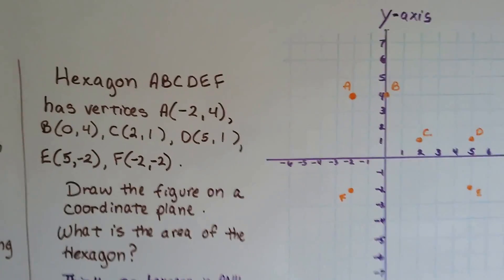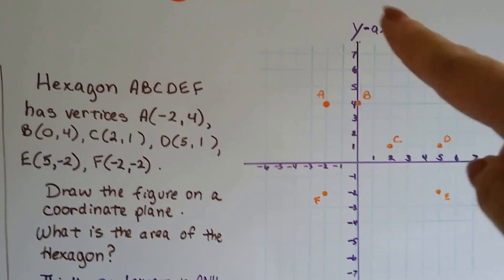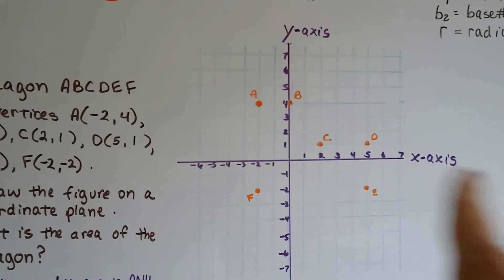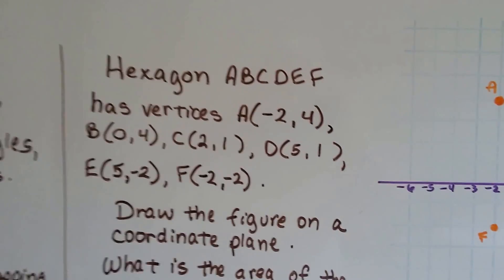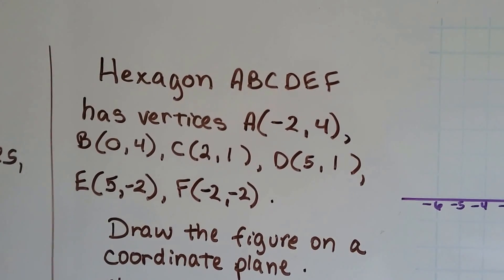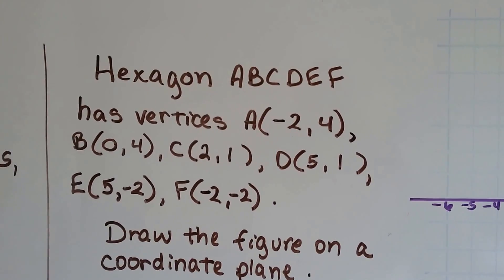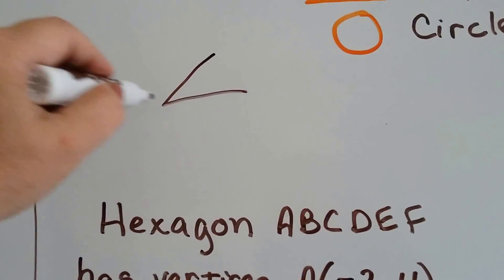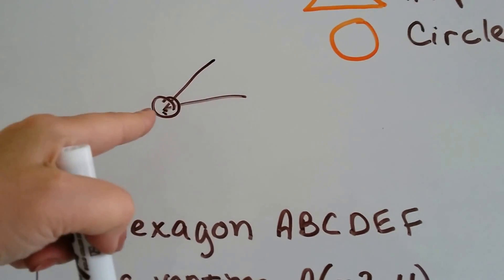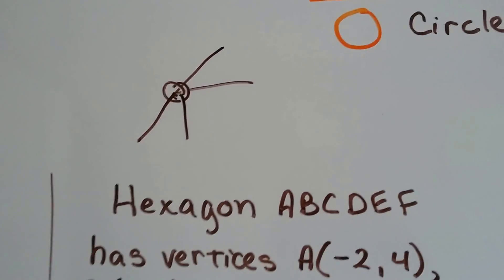So, I've got our coordinate plane drawn. There's our y-axis that goes vertically up and down, and here's our x-axis that goes horizontally across. And here's our problem. Hexagon ABCDEF has vertices. Remember what vertices are? A vertex is a corner of an angle. And if you have more than one, then it's vertices, that's the plural.